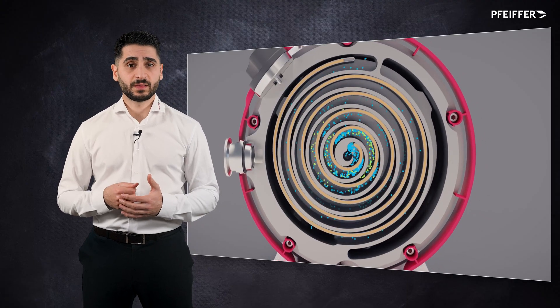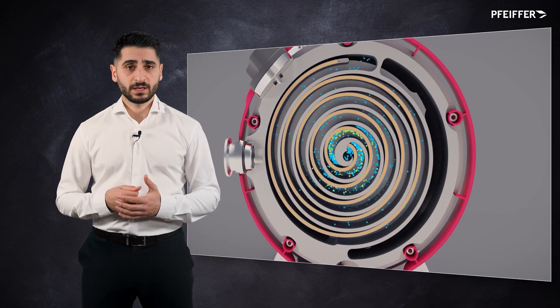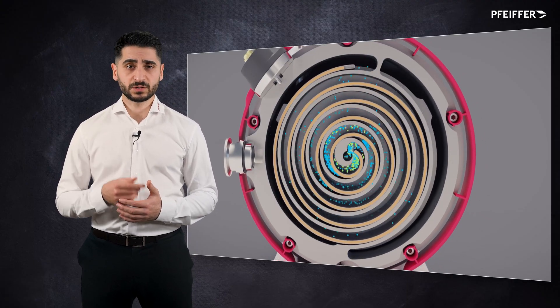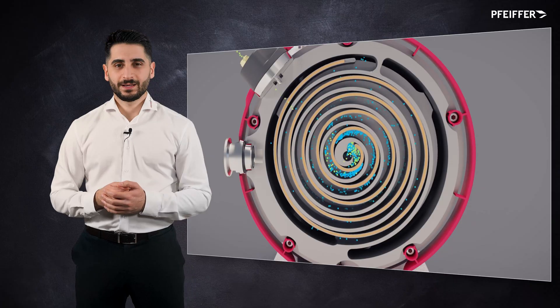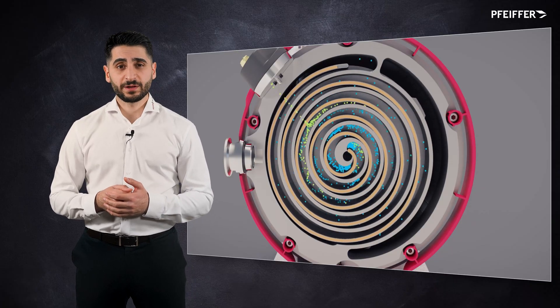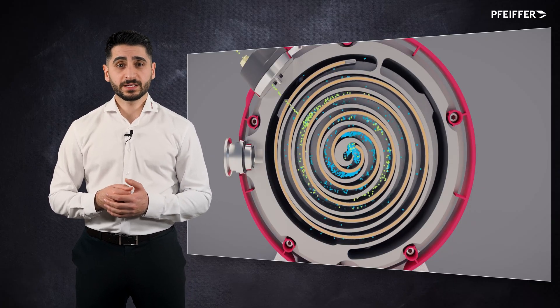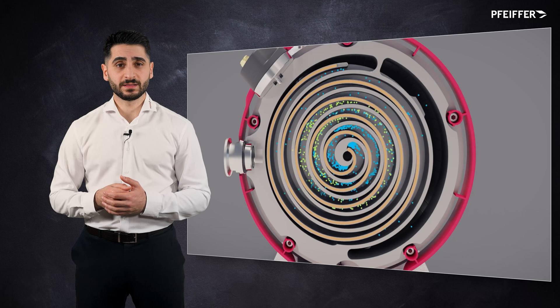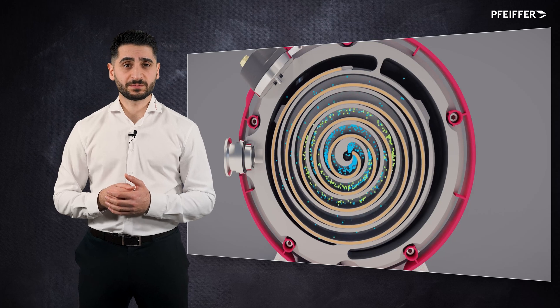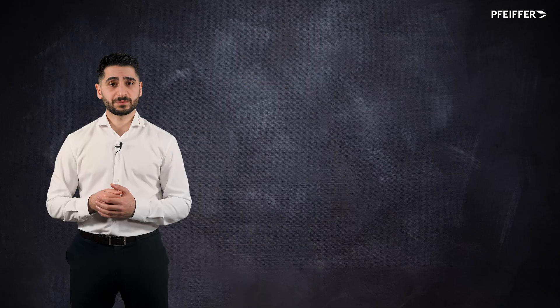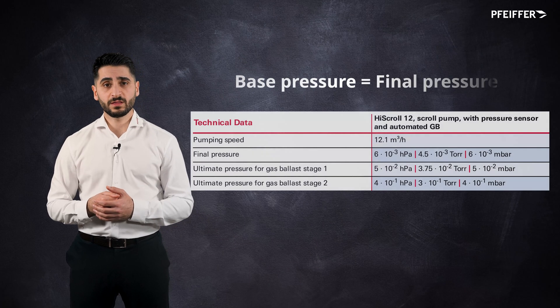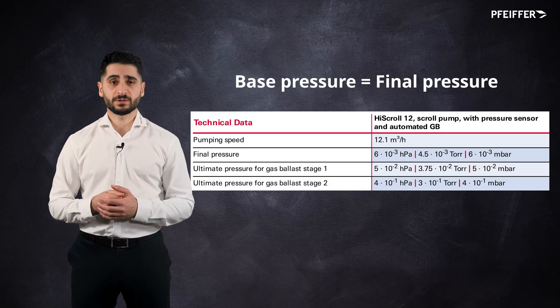inert gas, represented by the yellow dots indicating gas particles, flows into the pump. We can see that the steam is expelled with the ballast gas. This action leads to a slight increase in the achievable base pressure of the vacuum pump. Consequently, vacuum pumps equipped with gas ballast specify the base pressure both with and without gas ballast.